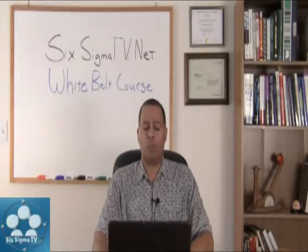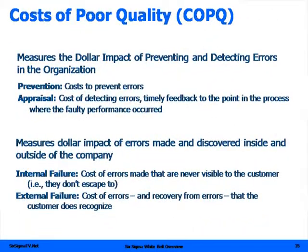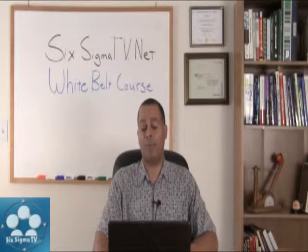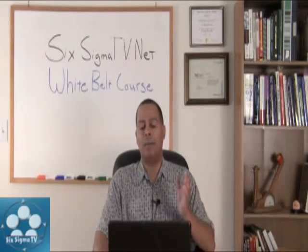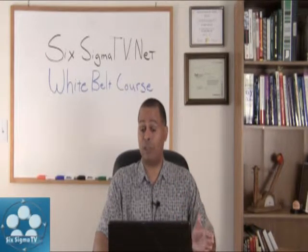Cost of poor quality includes: preventative cost — the cost to prevent errors; appraisal cost — the cost to detect errors in your process; internal failures — things caught in-house that haven't reached the customer yet; and the most crucial, external failures — when a defect or poor service actually reaches the customer, what is that external failure cost?